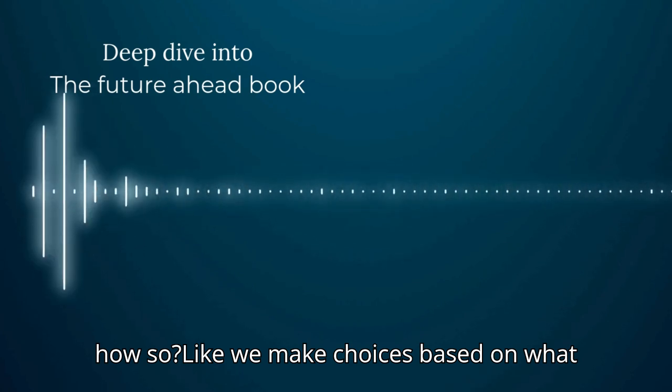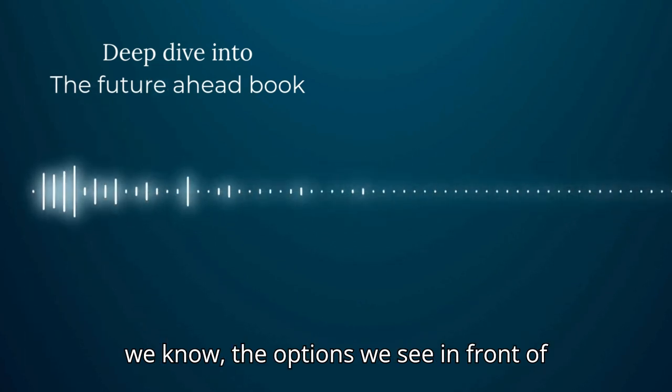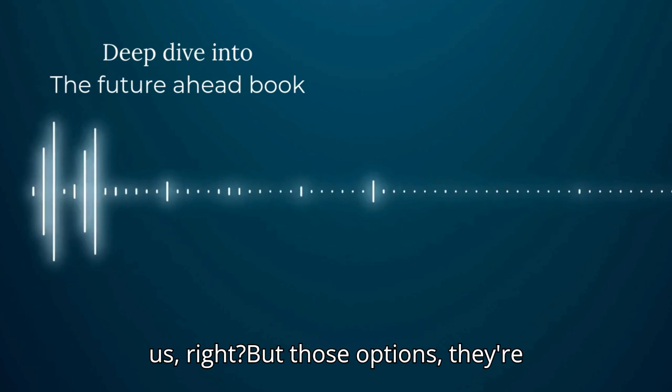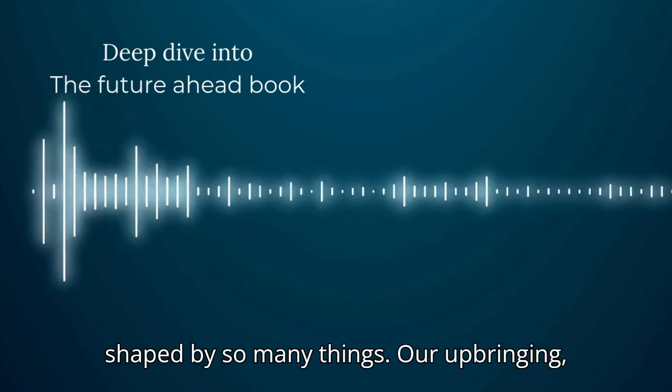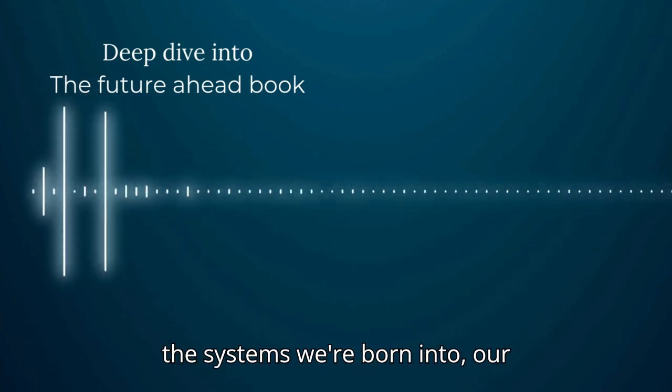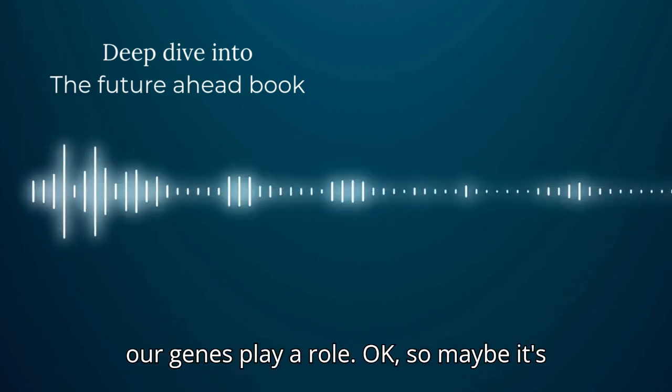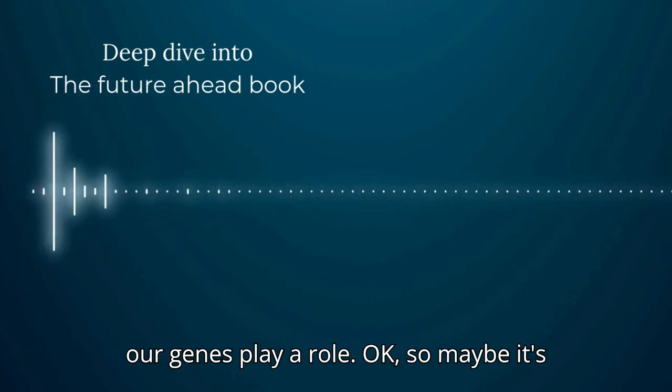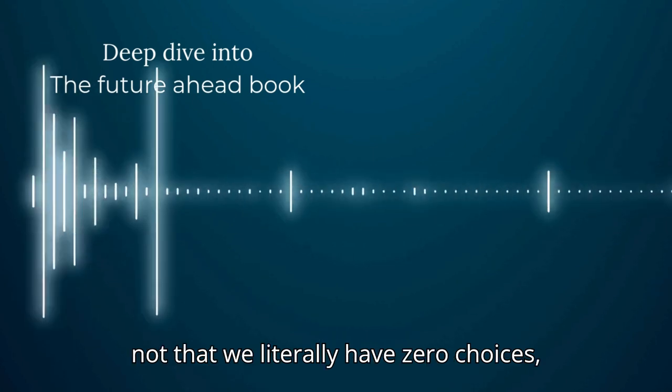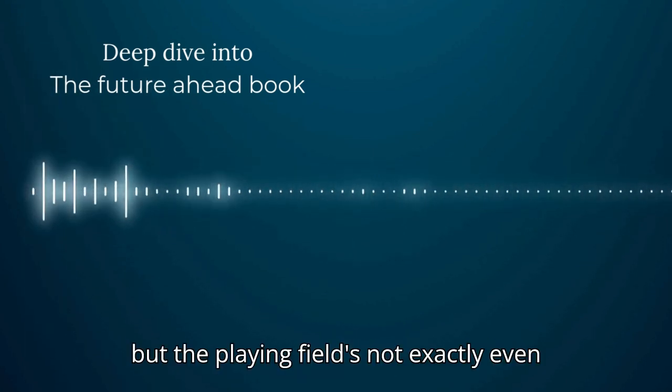Right. What if it goes back to that knowledge thing we were talking about? Okay, how so? Like we make choices based on what we know, the options we see in front of us, right? But those options, they're shaped by so many things: our upbringing, the systems we're born into, our families, our experiences. Exactly. Even our genes play a role.